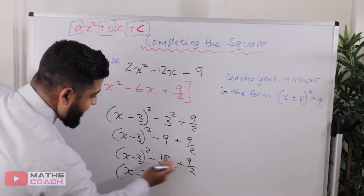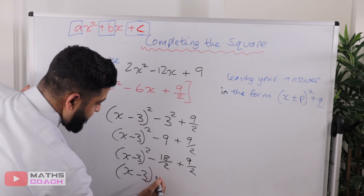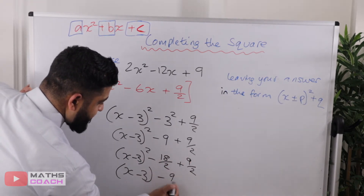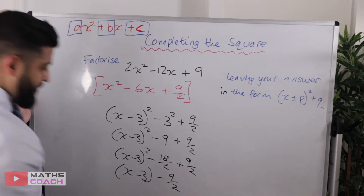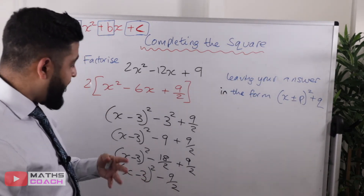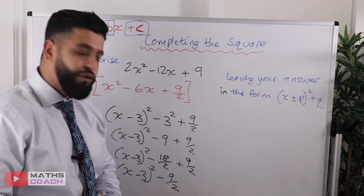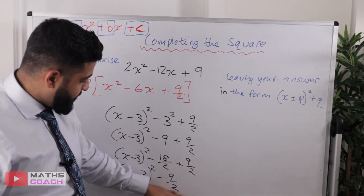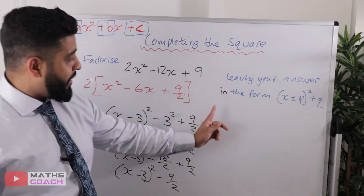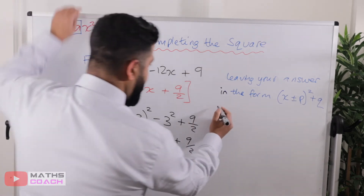I'm going to collect those together, so just the numerators: minus 18 plus 9 is minus 9 over 2. Be very careful here — little mistakes like forgetting the squared sign can cause a lot of confusion. So this step is now complete.